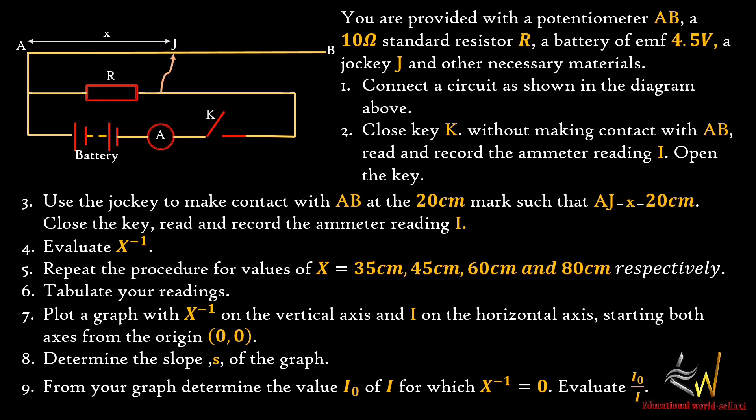Open the key. Use the jockey to make contact with AB at the 20 centimeter mark, so that AJ is equal to x, and x equals 20 centimeters. Close the key, read and record the ammeter reading I, and evaluate the inverse of x. Repeat the procedure for values of x equal to 35, 45, 60, and 80 centimeters respectively. Tabulate your readings.